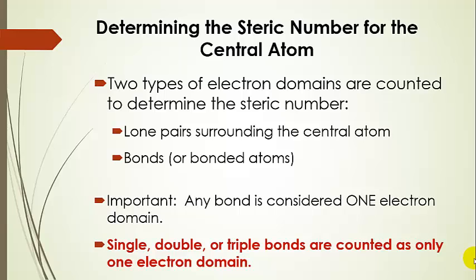There are two types of electron domains: lone pairs, and bonds or bonded atoms. One really important factor is that any bond is considered just one electron domain. That means single bonds, double bonds, and triple bonds are only counted as one electron domain. So you would not count a triple bond as three electron domains. For the purposes of VSEPR, it's just one because you're counting bonded atoms — it doesn't matter if it's a single, double, or triple bond.